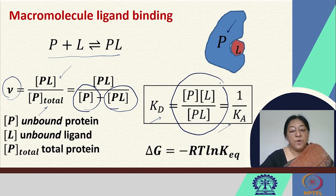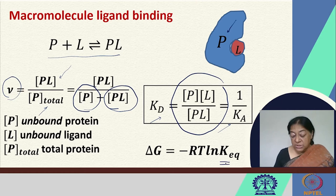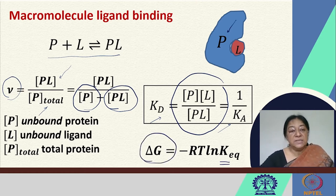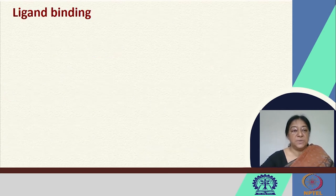From the dissociation constant — from the equilibrium constant — we can get the free energy associated with this at the specific temperature of the experiment.